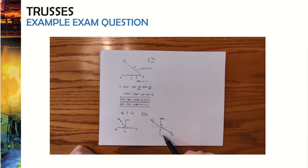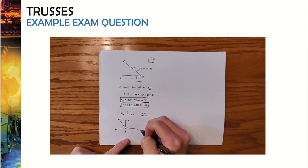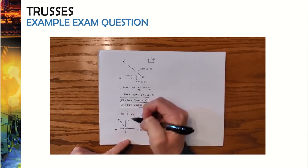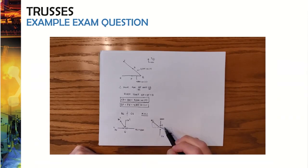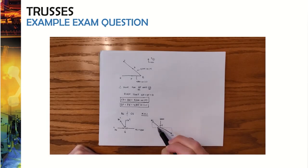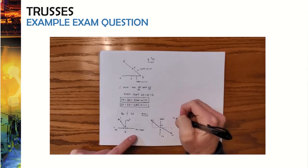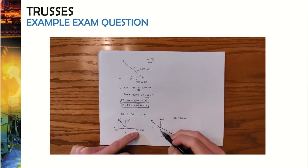Looking at joint C, we have 4,000 pounds applied, CG directed upward, and members BC and CD which are collinear. Because BC and CD fall along the same line and the 4,000-pound force and CG fall along the same line, the 4,000-pound force must equal CG. Therefore CG = 4,000 pounds, and because we drew it pointing up toward the node, it is in compression.